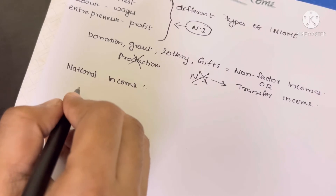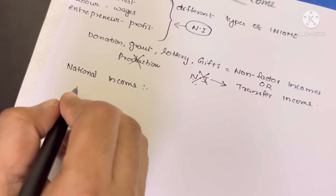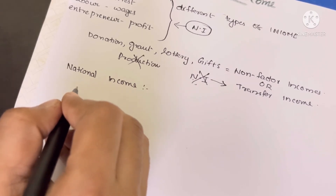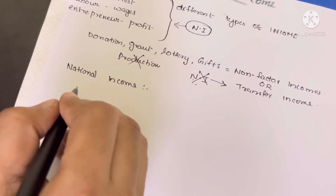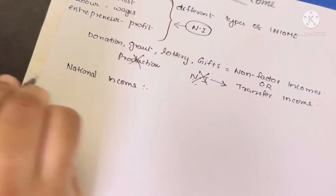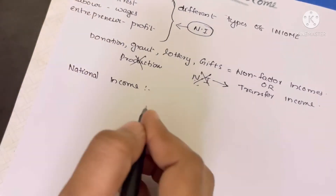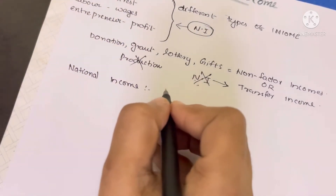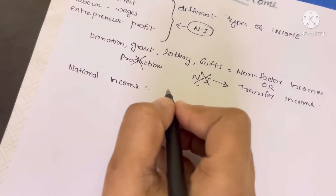He is a resident. He also can be a non-resident. There is a distinction between resident and non-resident in economics. A person can be a resident or a non-resident, or a citizen.